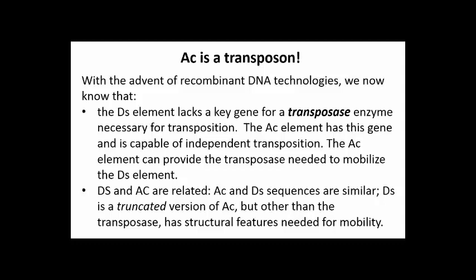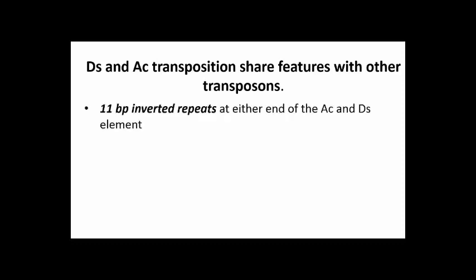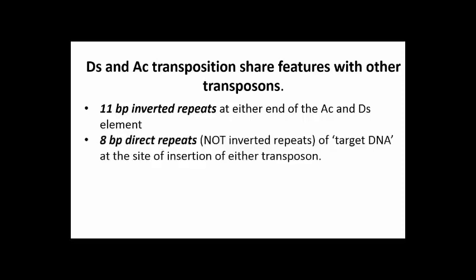DS retains other features required for transposition, and DS and AC transposition share features with other transposons. Both have 11 base pair inverted repeats at either end of the element. After transposition, they leave an 8 base pair sequence in the same orientation — that is, direct repeats of insertion site DNA flanking the elements that have just inserted themselves.